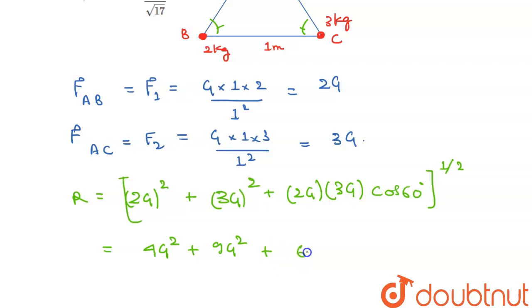6g squared times 1 by 2. So, this will give us root over 19g squared. So, g root over 19 will be our resultant force.